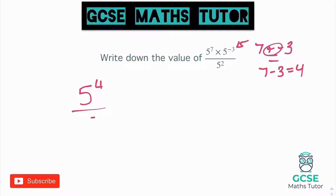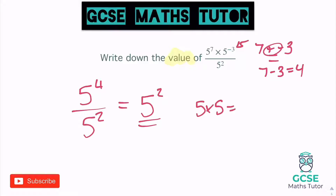And we're going to divide that by five squared. Now we're doing a division — we've got five to the power of four on the top, take away five to the power of two. So four take away two leaves us with two. So our final answer there is five to the power of two. But it did say to write down the value. So five squared means five times five, and five times five is 25. So that is our value — 25.